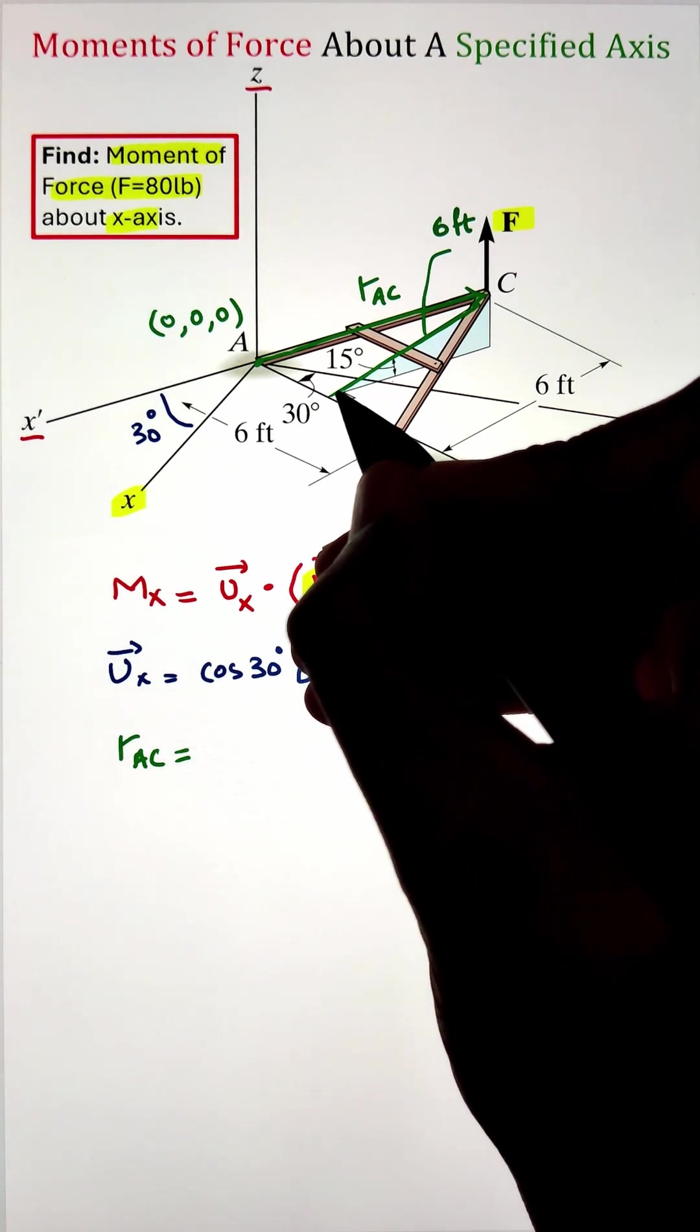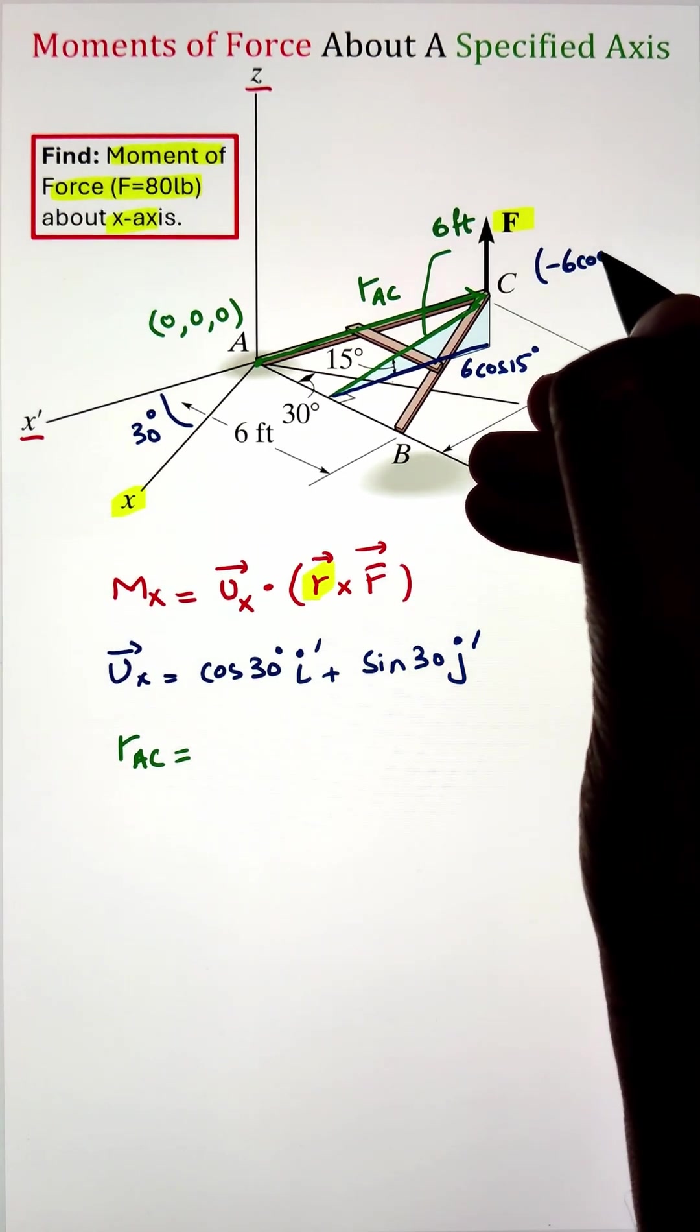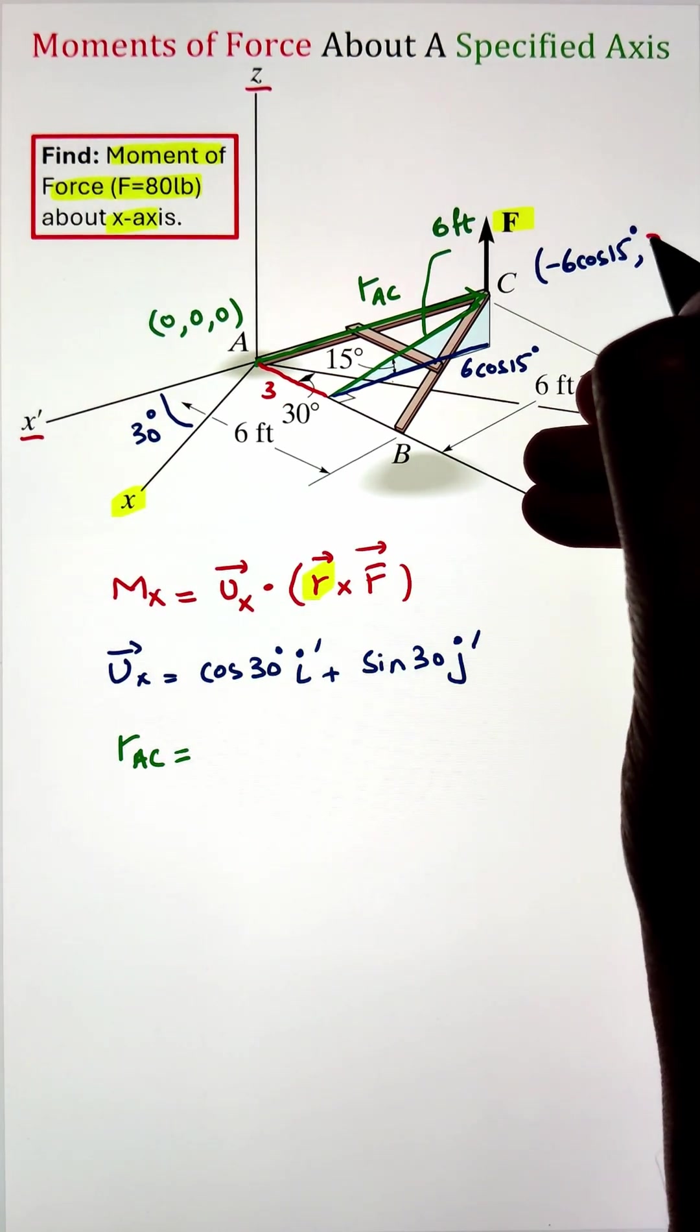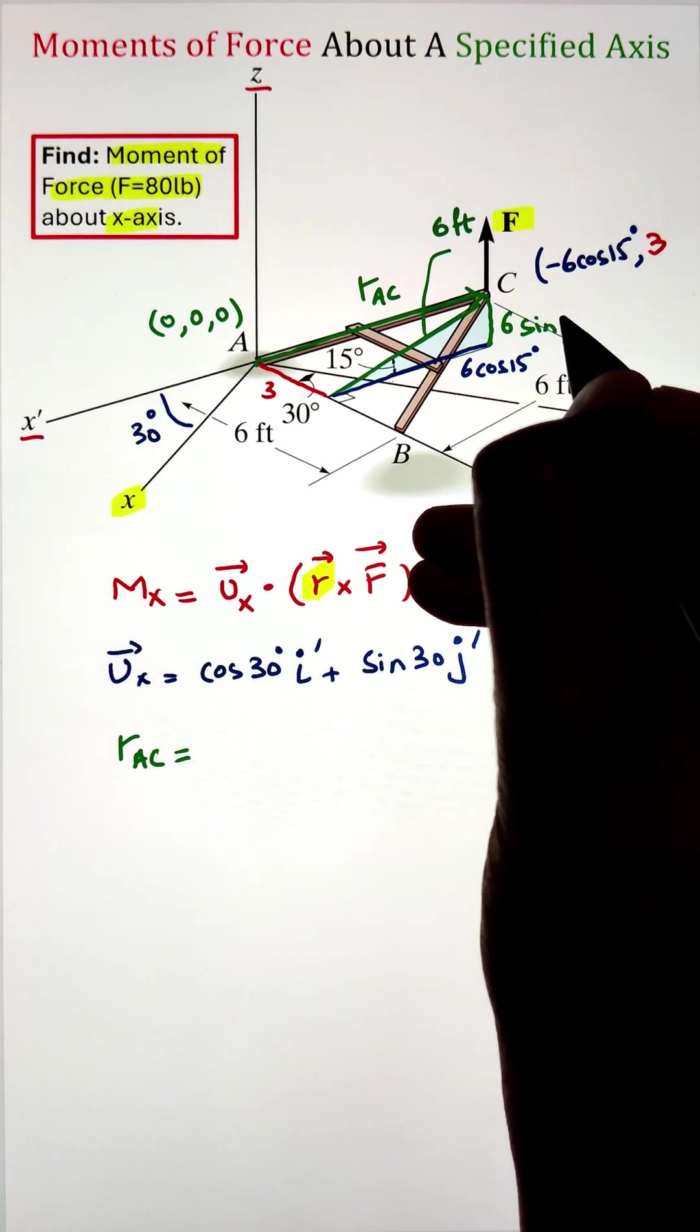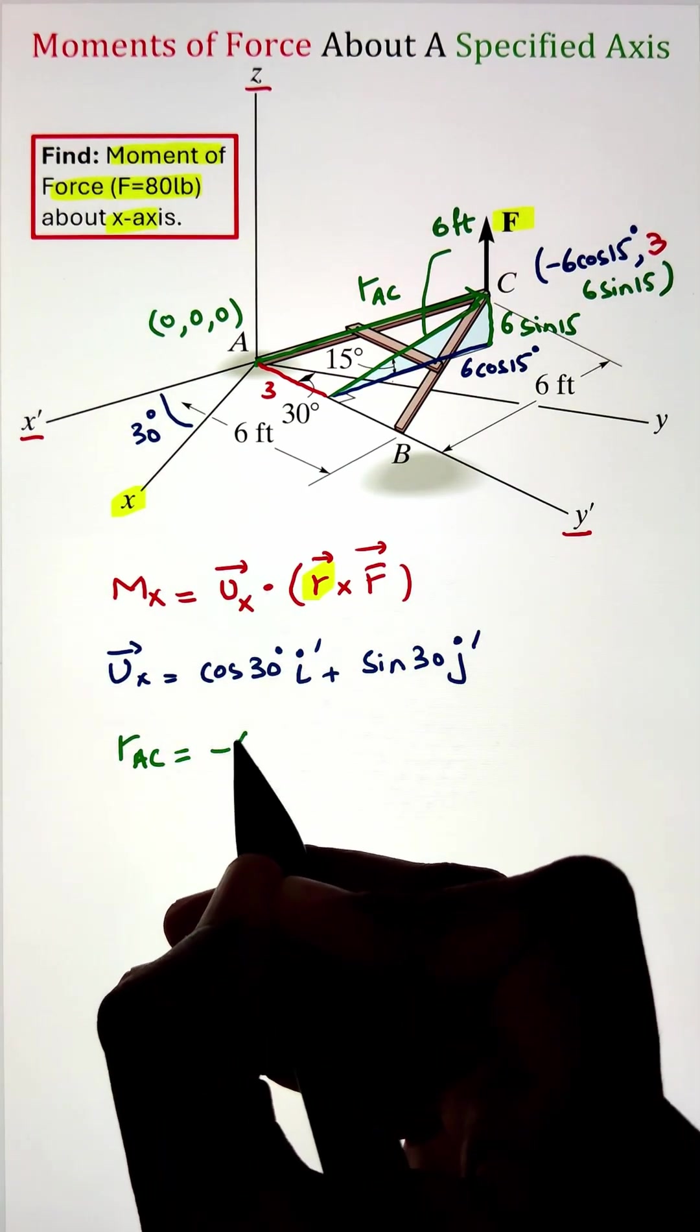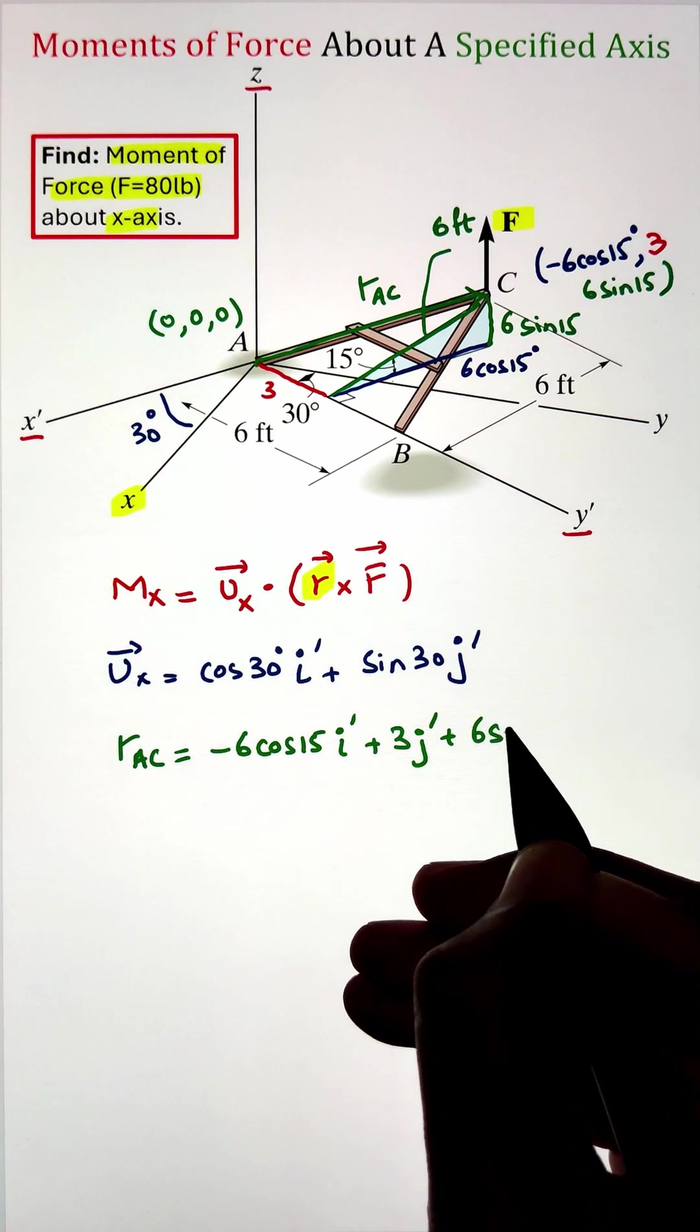To get that, we can identify the point coordinates of C. Since the length of that frame is 6 feet but it is tilted at an angle of 15 degrees on our z and x prime plane, in order to get our x prime component we are taking the cos 15 function of 6. But since it is acting in the negative direction, that's why I have minus 6 cos 15. Whereas the component along the y prime direction of point C is 3 feet, and the z component can be calculated by taking the sin 15 function, so the z component is 6 times sin 15. Once we have that, we can do head minus tail and identify our position vector r_AC.